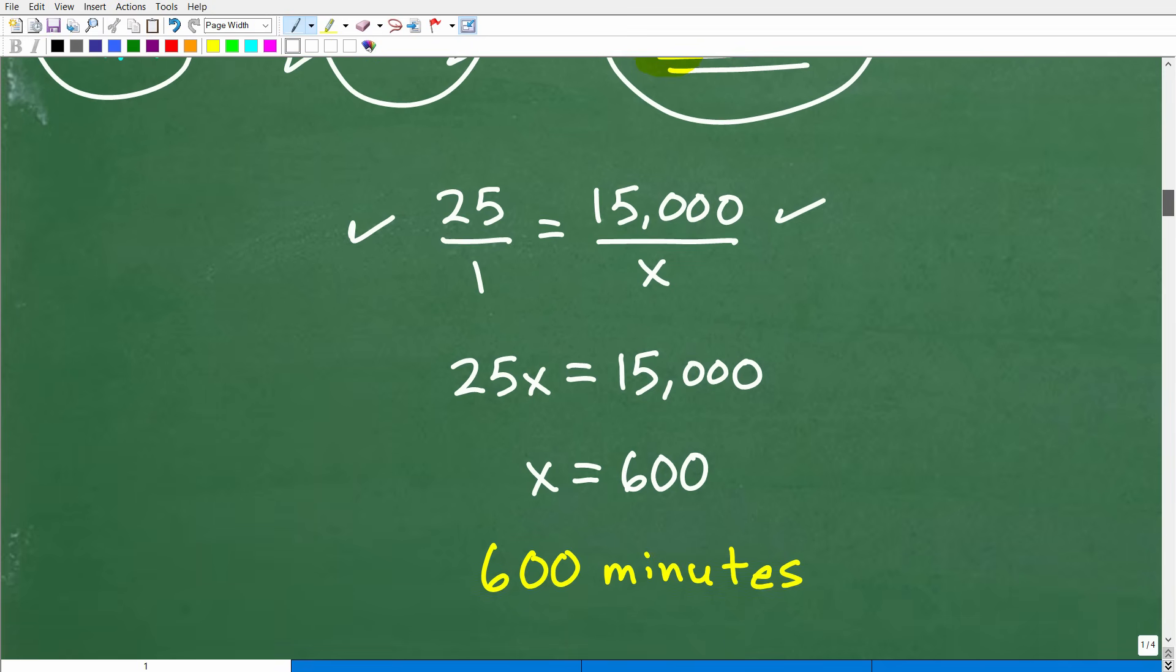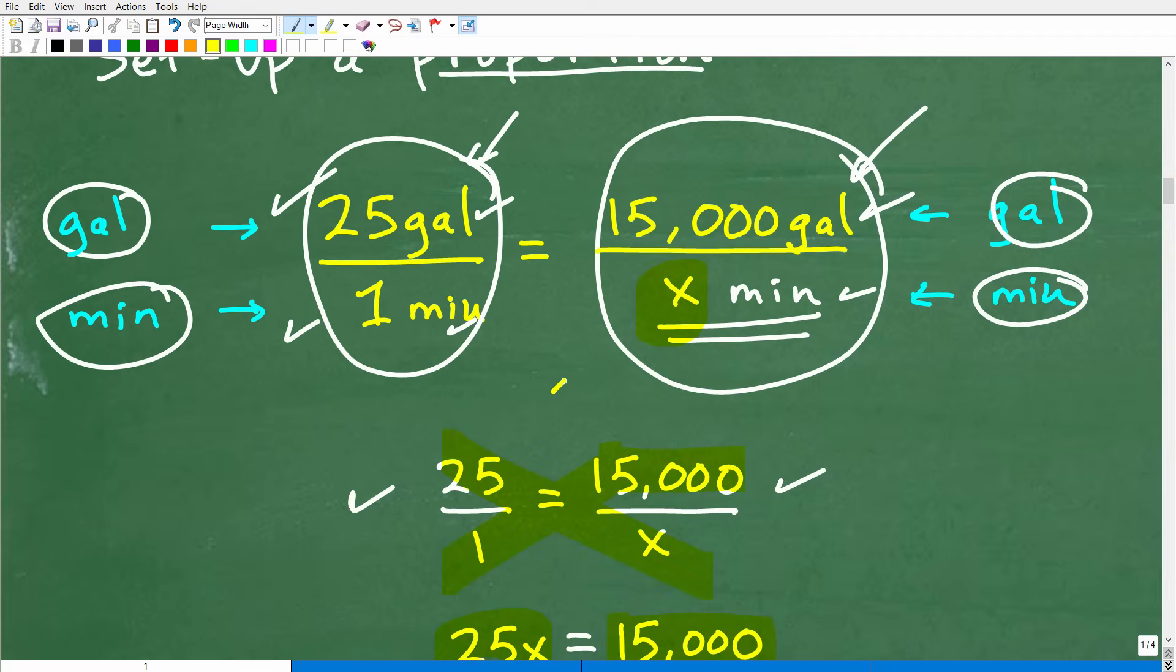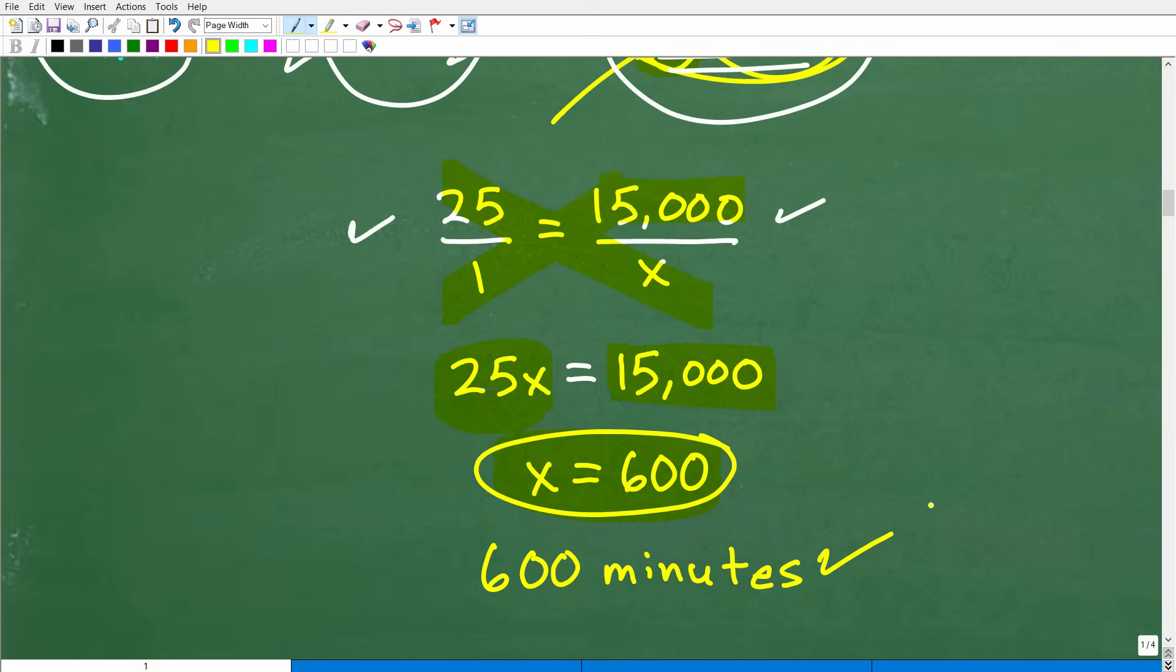How are we going to solve for X? We're going to use that cross product. So 25 times X is 25X. And that's going to be equal to 1 times 15,000, which is 15,000. So how do I solve for X? I'm going to divide both sides of the equation by 25. I get X is equal to 600. But what is X? Let's go back up here to make sure we understand. X is minutes. X is that unknown that we solve for, but its unit of measure is minutes.